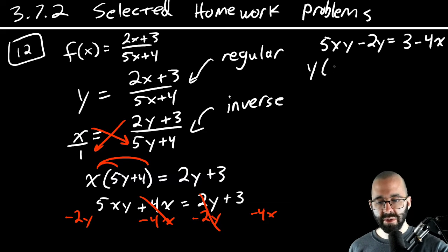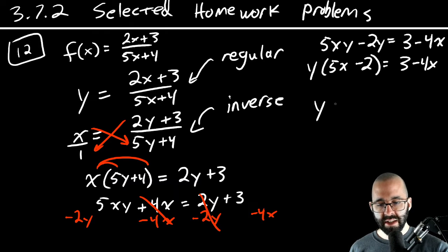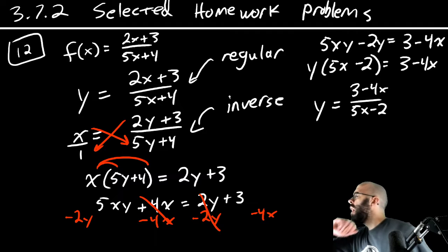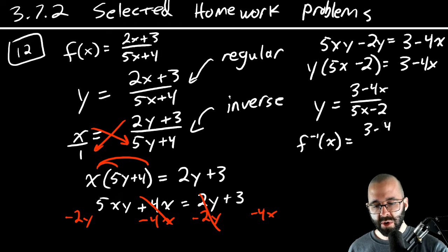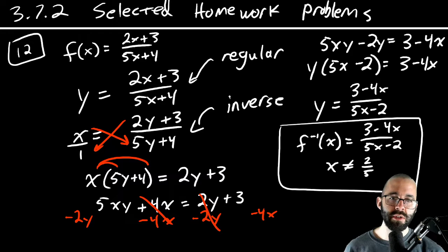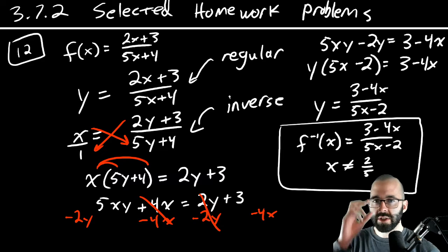We're almost done. Let's factor out a Y from the left hand side. Five X minus two is what we're left with. Three minus four X over here. And divide both sides by that coefficient of Y. And we'll get three minus four X divided by five X minus two. And as long as X is not two fifths, we're okay. This is our inverse function: three minus four X divided by five X minus two. As long as X is not equal to two fifths, because if X is equal to two fifths, we're dividing by zero. That's no good. That's the inverse function here.